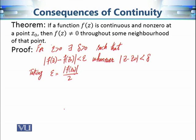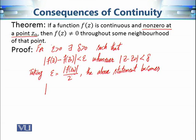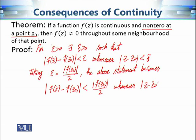We can take epsilon to be any positive real number, and since f(z) is non-zero at point z₀ (the given condition), the modulus |f(z₀)| must be non-zero. Dividing a non-zero number by two gives a positive non-zero number. By taking this epsilon, the statement becomes: |f(z) - f(z₀)| < |f(z₀)| / 2, whenever |z - z₀| < delta.